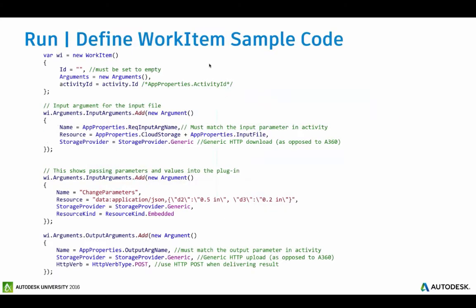Here's an example of how you actually set up a work item — the actual action that happens on that activity. We create the work item object, specify what the arguments are and the activity ID, and then the input arguments specify where the input files are. I also show passing some specific parameters through — the sample app package changes some parameters and you pass those parameters and values in via JSON. Then the output gets stored in the output argument name.